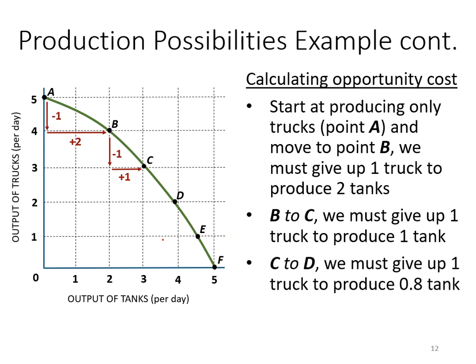The same calculation applies moving from C to D: the number of tanks increases from three to four, and you sacrifice one truck. This is how to calculate opportunity cost. A useful tip when working on problems: if you look at the production possibility curve and one variable increases while the other decreases, the axis that decreases indicates the opportunity cost.